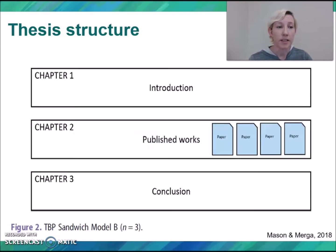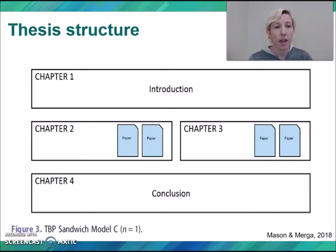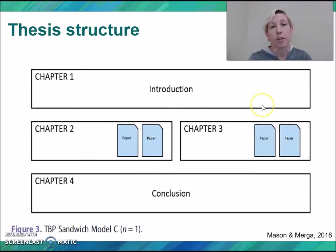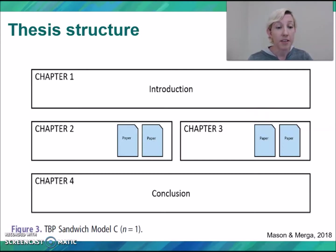Similarly, we have a model that is also a sandwich model, but all the papers are together within one chapter. The papers in the center are organized in different ways — we've used two papers within two chapters as our example, but there were different variations. For example, chapter two might be focused on one particular research question and chapter three on another, or different phases of the study, or different methodological approaches. These sandwich models were by far the most common.